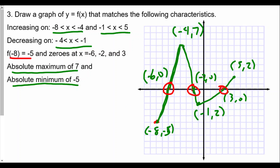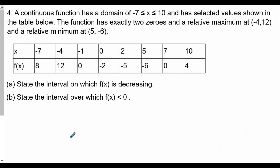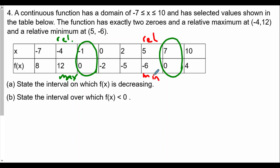A continuous function has a domain of negative 7 to positive 10. For the continuous function where negative 7 is less than or equal to x less than or equal to 10, selected values are shown in a table. The function has exactly two zeros — at negative 1 comma 0 and 7 comma 0. It has a relative max at negative 4 comma 12, and a relative min at 5 comma negative 6. We want to know when f of x is decreasing.